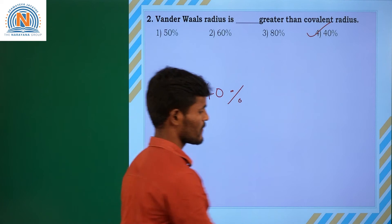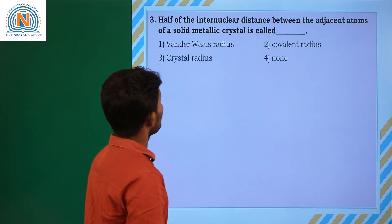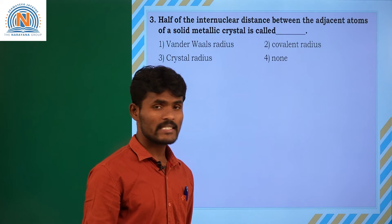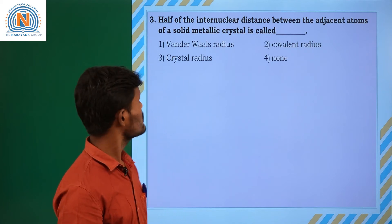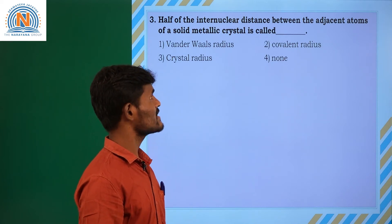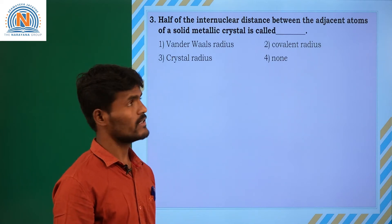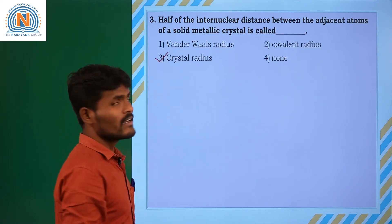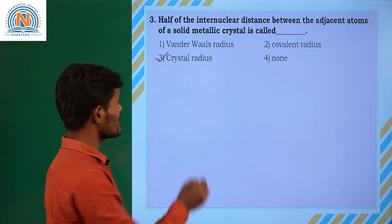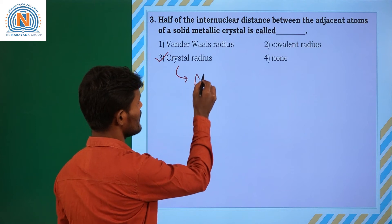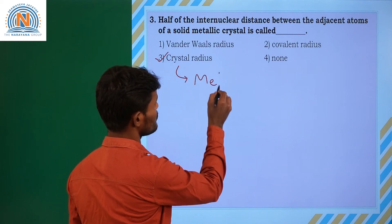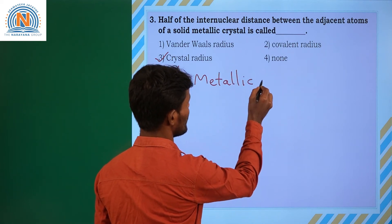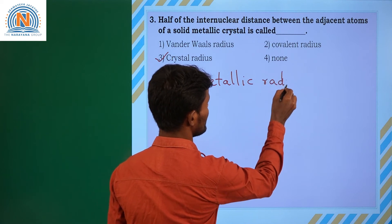Third question: half of the internuclear distance between the adjacent atoms of a solid metallic crystal is called — what is that? Crystal radius. Crystal radius is also called metallic radius.